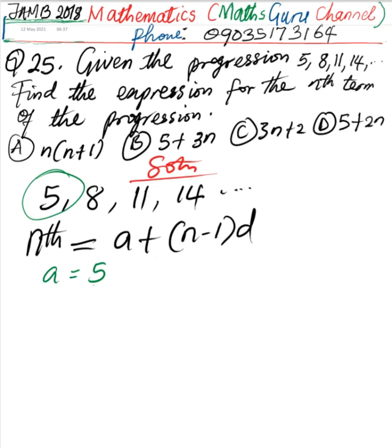And the common difference can be known using any of these. You can either say 8 minus 5 or you say 11 minus 8 or 14 minus 11. We can simply use common difference is equal to 14 minus 11. Just to use any one. Equal to 3.